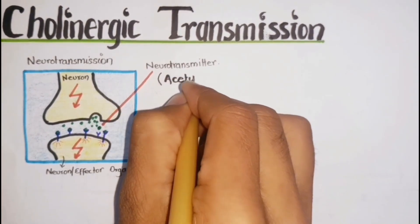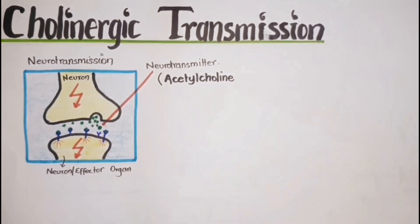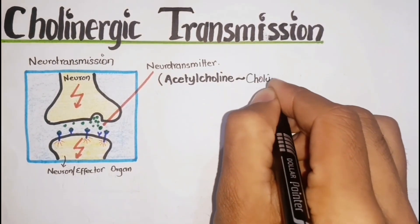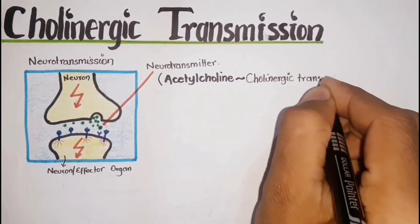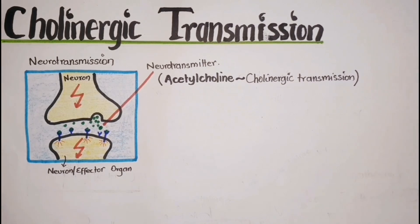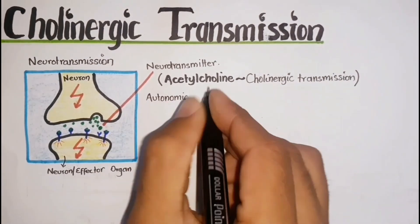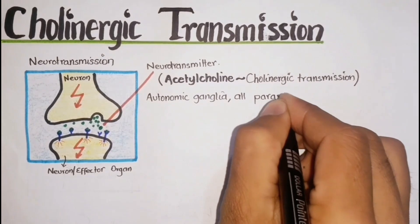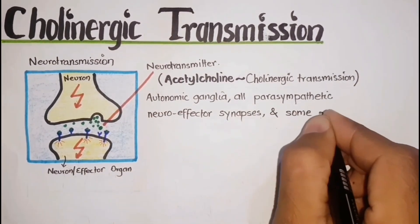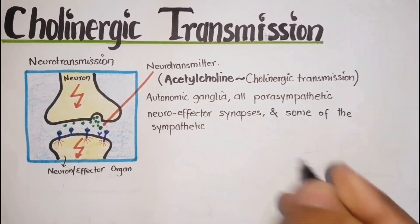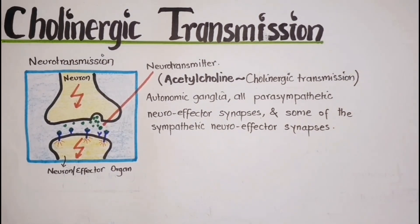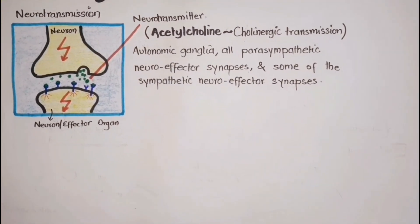When acetylcholine is used as a neurotransmitter for transmitting impulses, this type of neurotransmission is called cholinergic transmission. This type of neurotransmission occurs in the autonomic ganglia, all parasympathetic neuroeffector synapses, and some sympathetic neuroeffector synapses, e.g., sweat glands.